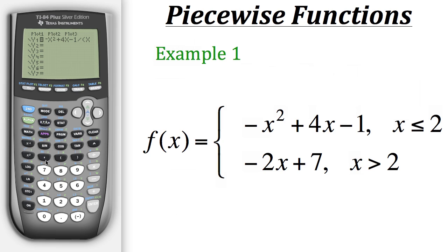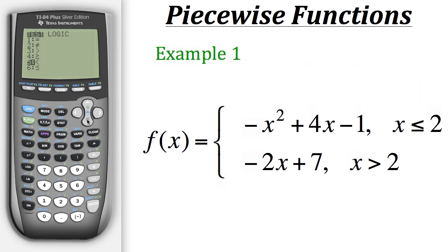So we'll hit x, and then to get to the inequality statements, we need to get to TEST — that blue lettering right above MATH. So to get there we need to hit second, then MATH. And now under this first tab you can see a list of different inequalities and equality signs. Here we need less than or equal to, so we'll hit option 6.